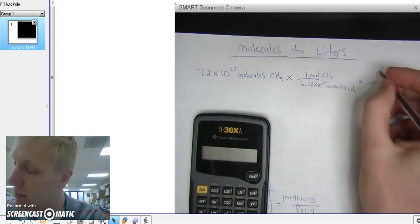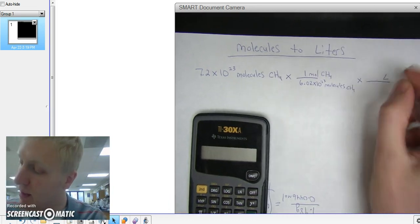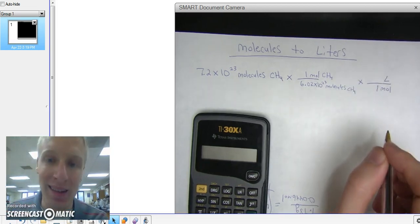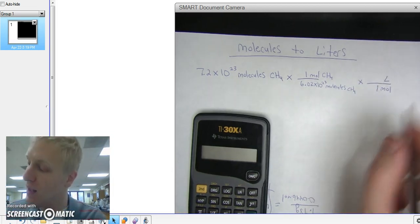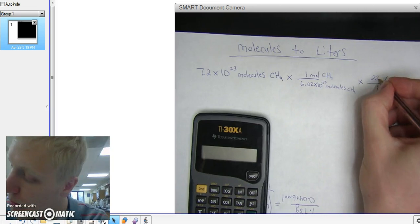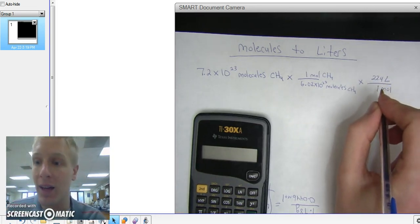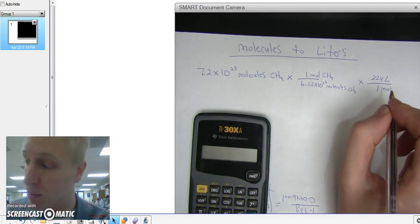Alright, so once I'm in moles, I can convert it to liters. I'm going to put liters on top and 1 mole on the bottom. And let's just assume that this is at STP. So then I can put 22.4 liters per 1 mole. That only works under standard conditions, STP.